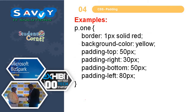Let us take an example. The border is 1px solid red, which means the entire thing uses that style. Background color is yellow, so the background color of the text is yellow. Padding-top is 50, padding-right is 30, padding-bottom is 50, and padding-left is 80. According to this, it gives the measurement. If you take only one paragraph element it will not give a clear reflection, but if you take 2 or 3, you can definitely understand the difference.